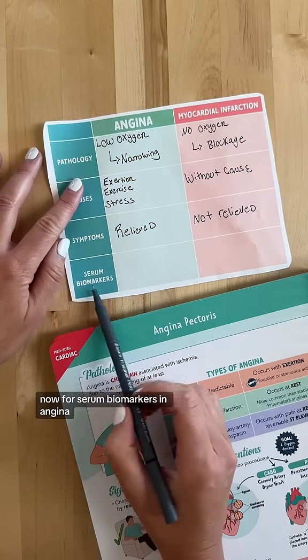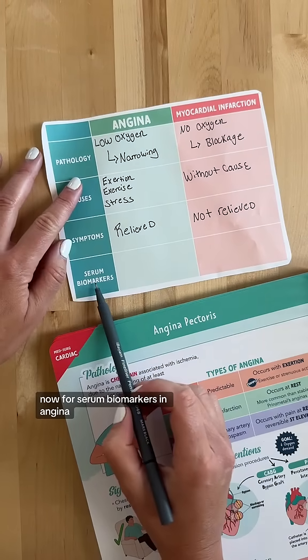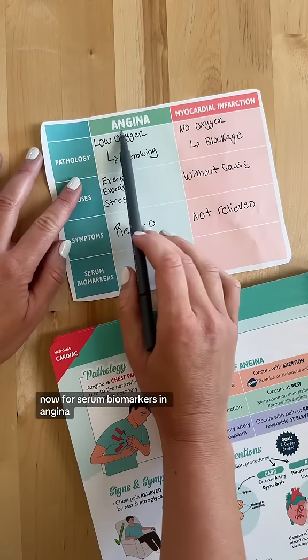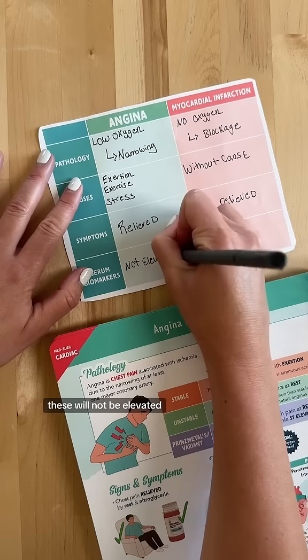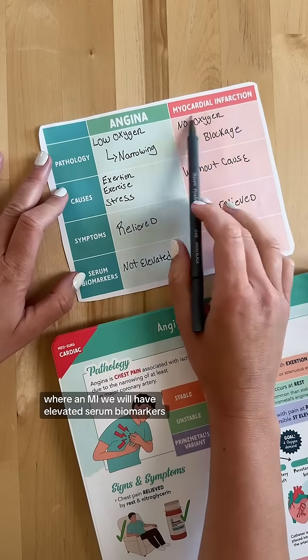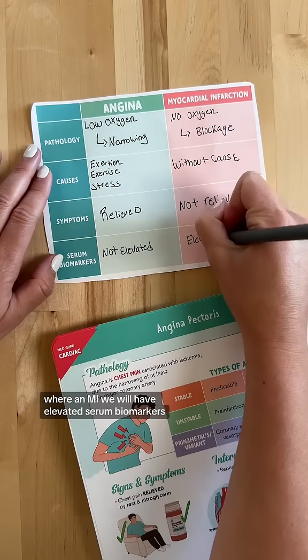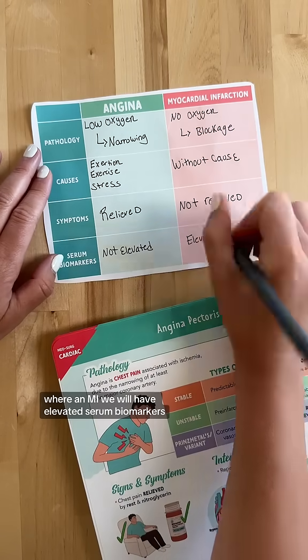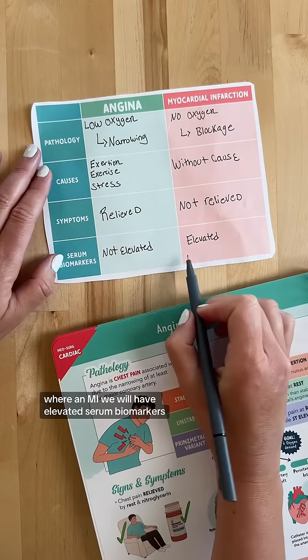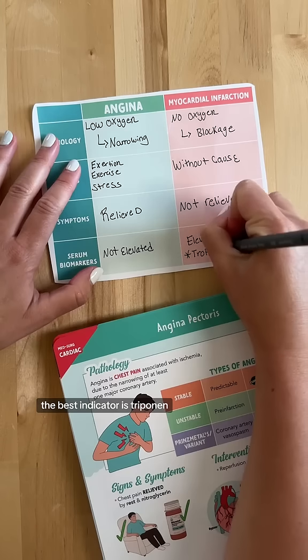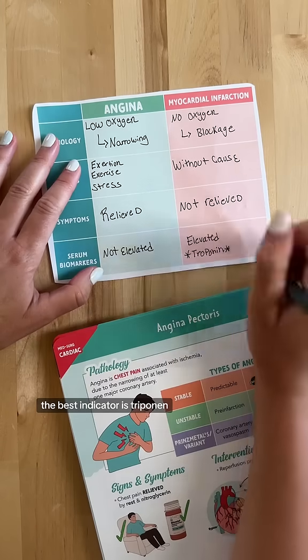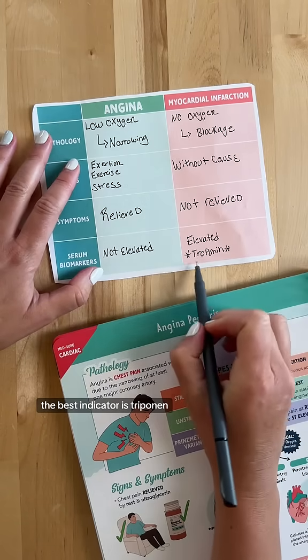Now for serum biomarkers: in angina, these will not be elevated, whereas in an MI, we will have elevated serum biomarkers. The best indicator is troponin.